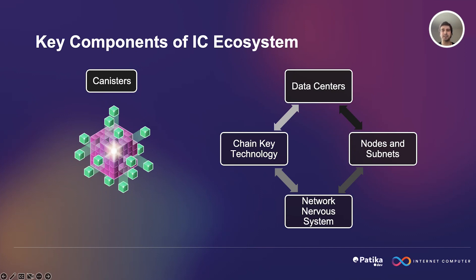Finally, we have canisters. Canisters are the basic unit of software deployment and execution on the Internet Computer Network. They are self-contained bundles of code, data, and memory that run on subnets and communicate with each other through messages. Canisters can implement any kind of functionality, such as web services, smart contracts, decentralized applications, or user interfaces. Canisters are scalable, secure, and autonomous, meaning they can adjust their resource consumption, protect themselves from malicious attacks, and manage their own life cycles. These components work together to create a seamless and unstoppable computing environment that can host any software or service on the public internet, providing a limitless platform for both developers and users to create and enjoy the next generation of internet services.